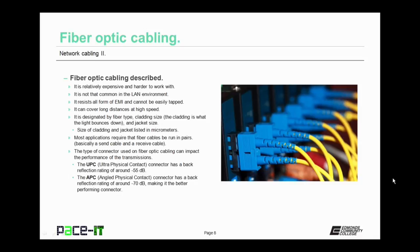There are two basic categories of connectors. There is the UPC, the ultra physical contact, which has a back reflection rating of around negative 55 decibels loss. Then there's the APC, the angled physical connector, which has a back reflection rating of around negative 70 decibels loss, making it the better performing connector.